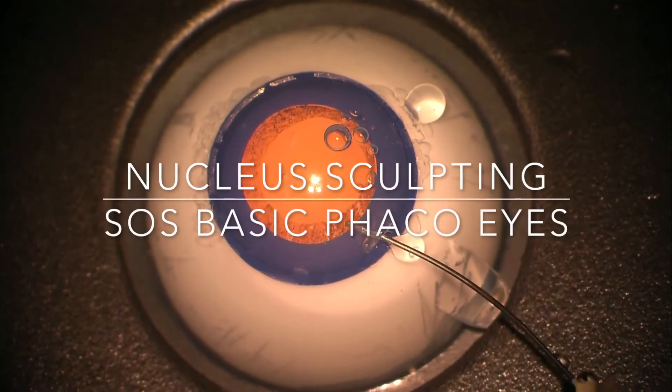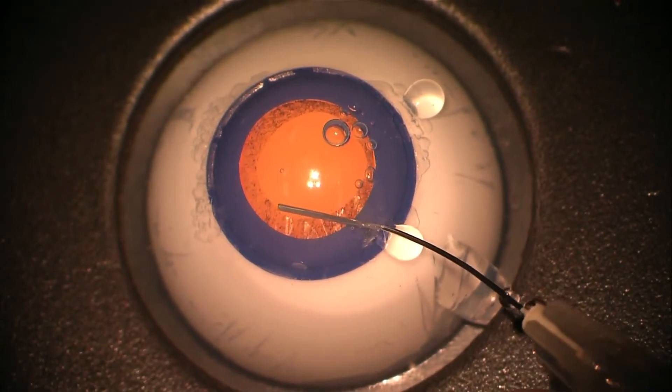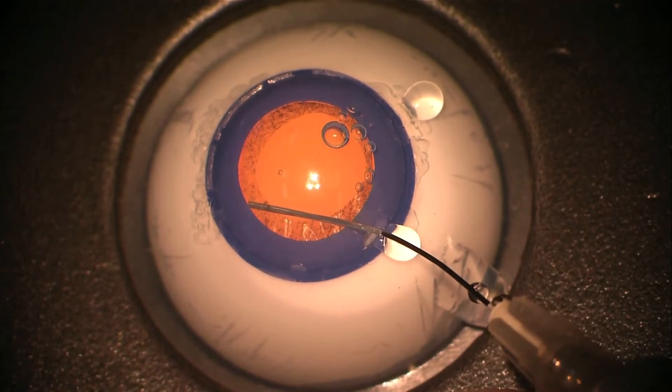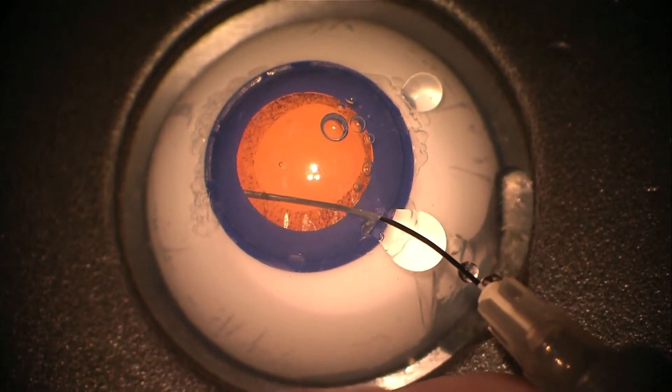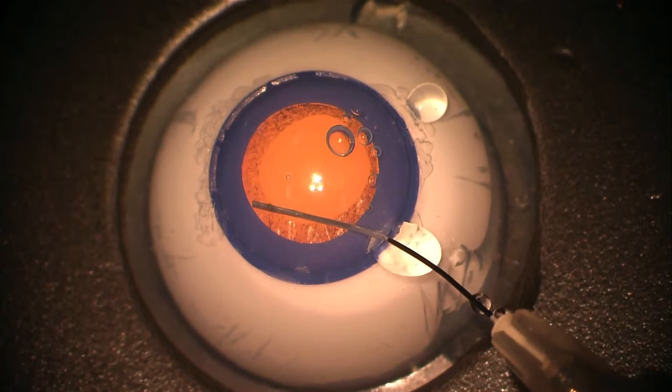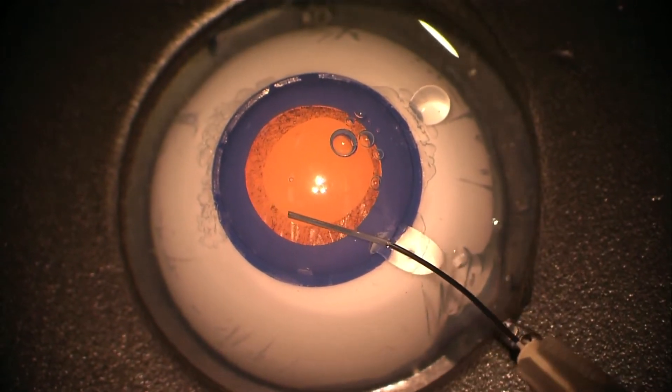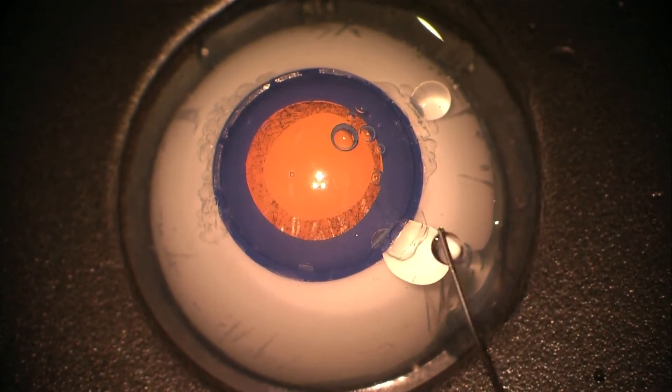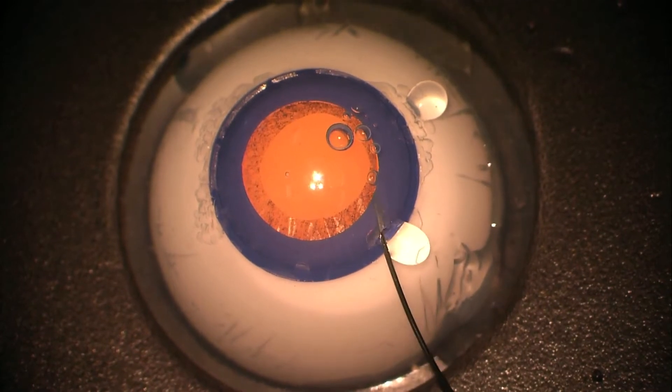In this clip we're showing how the simulated ocular surgery basic faco eyes can be used to practice sculpting of the nucleus and hydro dissection. Here we can see hydro dissection being carried out and quite frequently you can see